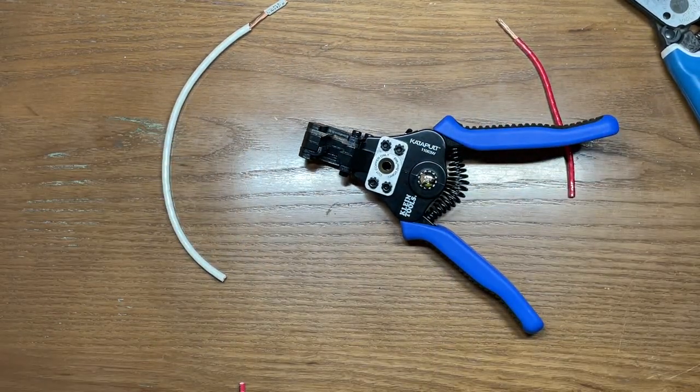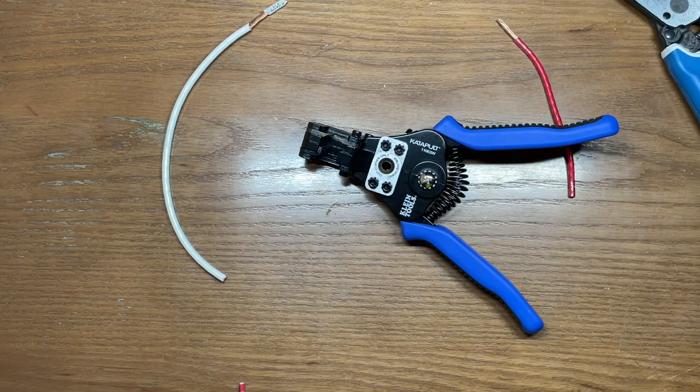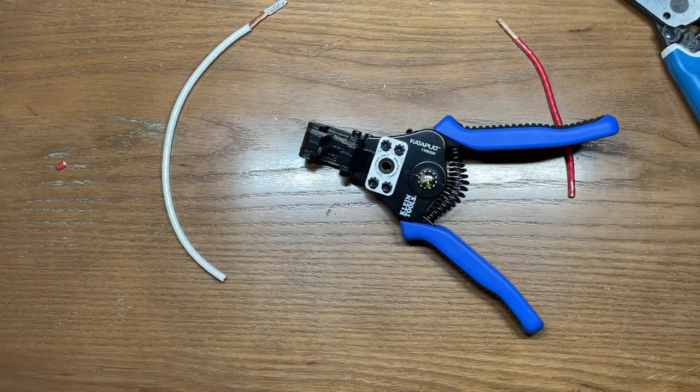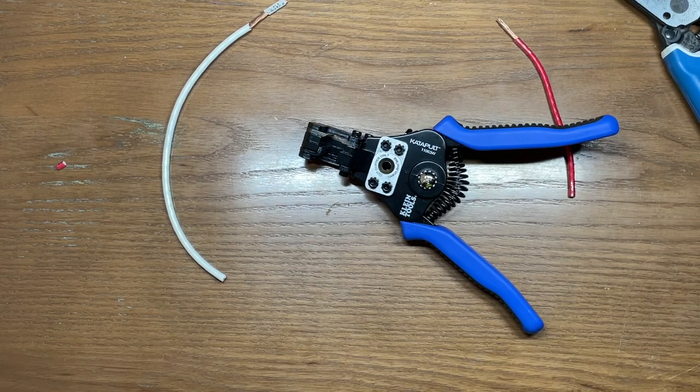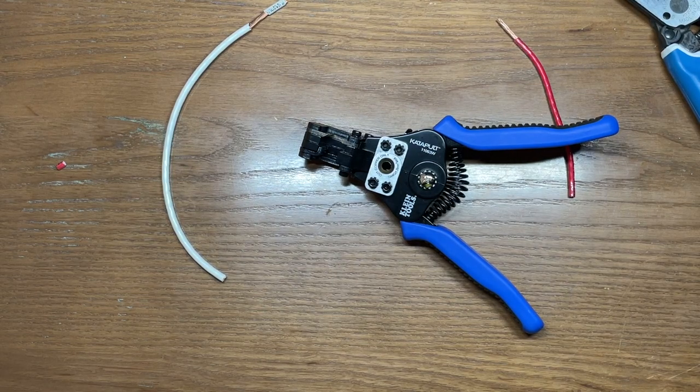Again, these are the Klein Catapult model number 11063Ws. I'll have links in the description below for these if you want to pick them up. They're actually very reasonably priced, and I highly, highly recommend them. My name is Ben. You've been watching the Texas Tool Crib. I appreciate you watching, and I'll see you in the next one.